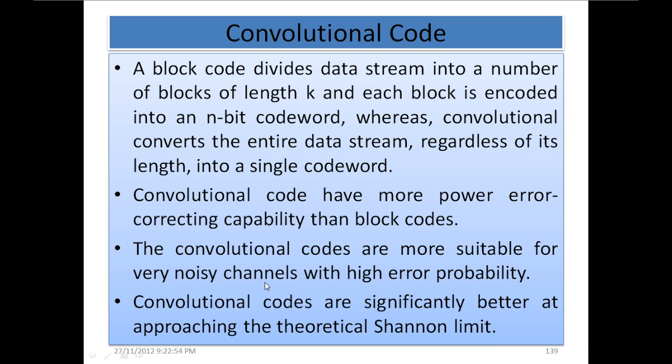Convolutional codes are more suitable for very noisy channels with high error probability. They are significantly better at approaching the theoretical channel limit. These are the key qualities and characteristics of convolutional codes.